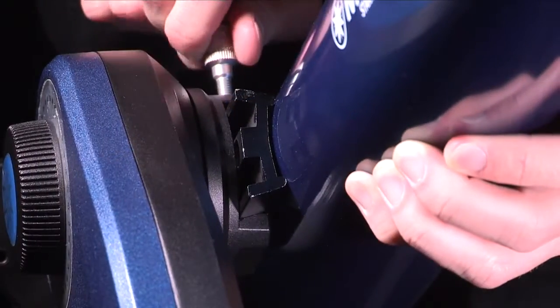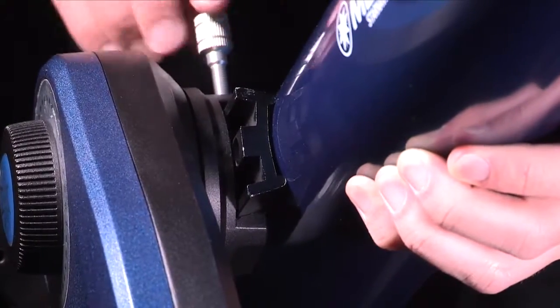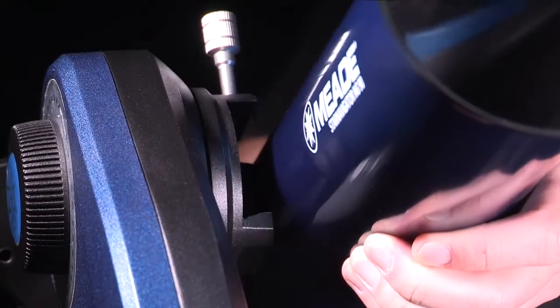In addition to these accessories, the Star Navigator NG includes a dovetail receiver which allows the user to easily remove the OTA from the mount.